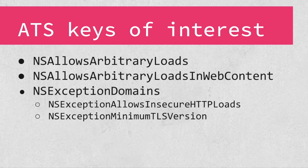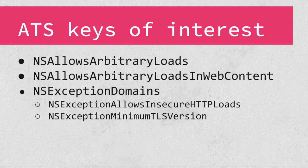However, NS Allows Arbitrary Loads can also be used to provide backwards compatibility for running on iOS 9, which had less granularity for exceptions. To allow for this, NS Allows Arbitrary Loads is ignored by newer versions of iOS when used in conjunction with other global exception keys that start with NS Allows. One such global exception key is NS Allows Arbitrary Loads in Web Content. An app that sets this key to true turns off ATS only for embedded browser objects known as web views, but ATS will remain in force for other connections. If this key is used in conjunction with NS Allows Arbitrary Loads, then ATS will be fully disabled on iOS 9 to allow backwards compatibility, but on iOS 10 and up, ATS will only be disabled for web views.